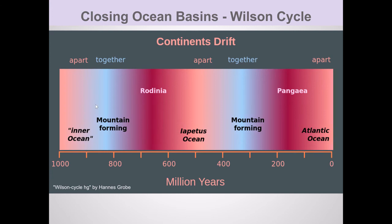We also have cycles of supercontinents, where everything breaks apart and then comes back together in big mountain-forming events. Eventually you get a supercontinent like Rodinia, then you open up these basins again and bring everything back together, forming a new supercontinent — the most recent one being Pangaea.